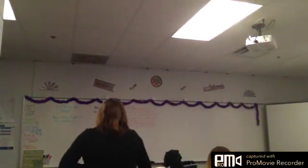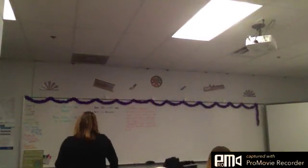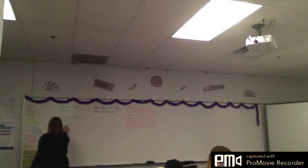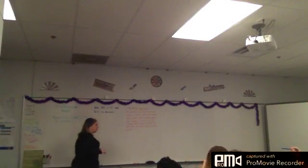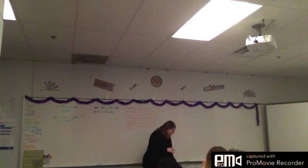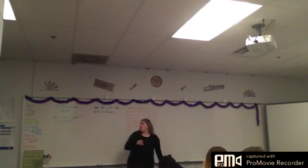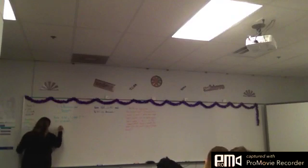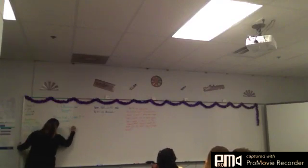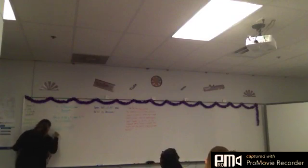7.3 is percents and decimals. How would you write these numbers as a percent? How would you write 0.62 as a percent? So you move the decimal point two spaces over, and so then it becomes 62%. So if I have 0.62 and I want to write it as a percent, I move this decimal and I get 62%.